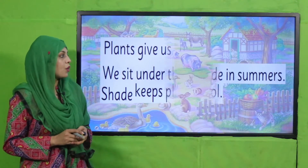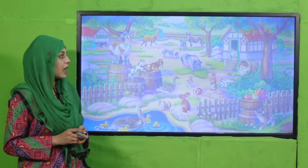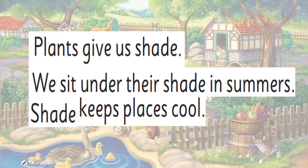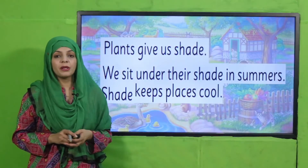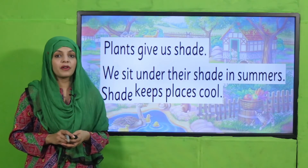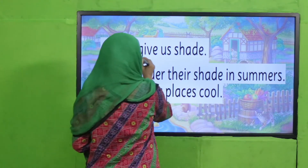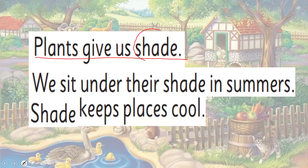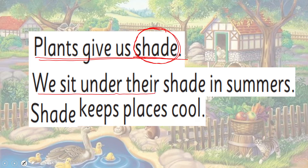I request you all to please open your Science GK1 books to the page 'What Plants Give Us.' Let's start the reading — put your fingers where I will be reading. Plants give us shade. What is shade? Yaani ke saya — plants hume saya dete hain. We sit under their shade in summers. Garmiyon mein hum unke saaye mein baithte hain.